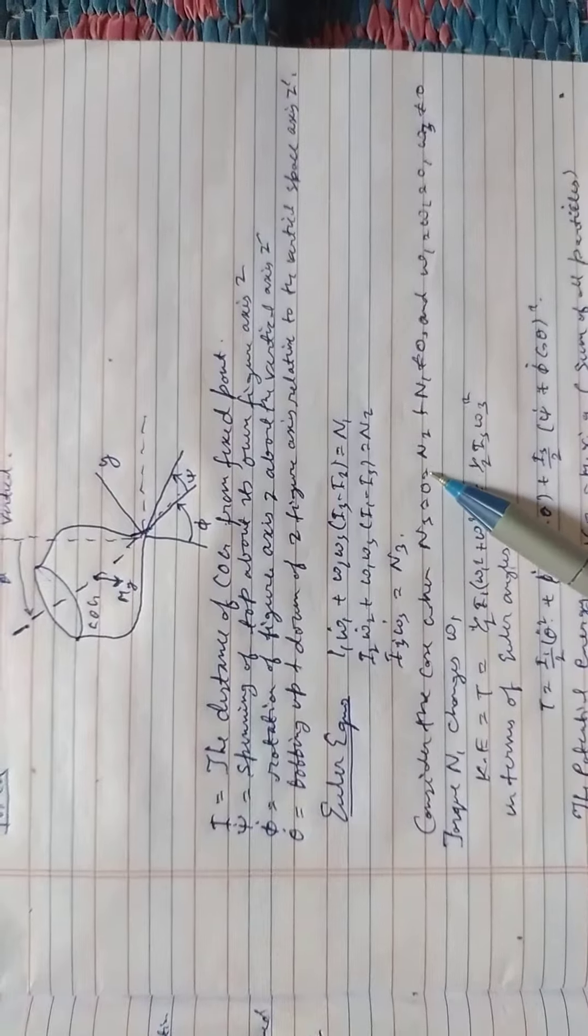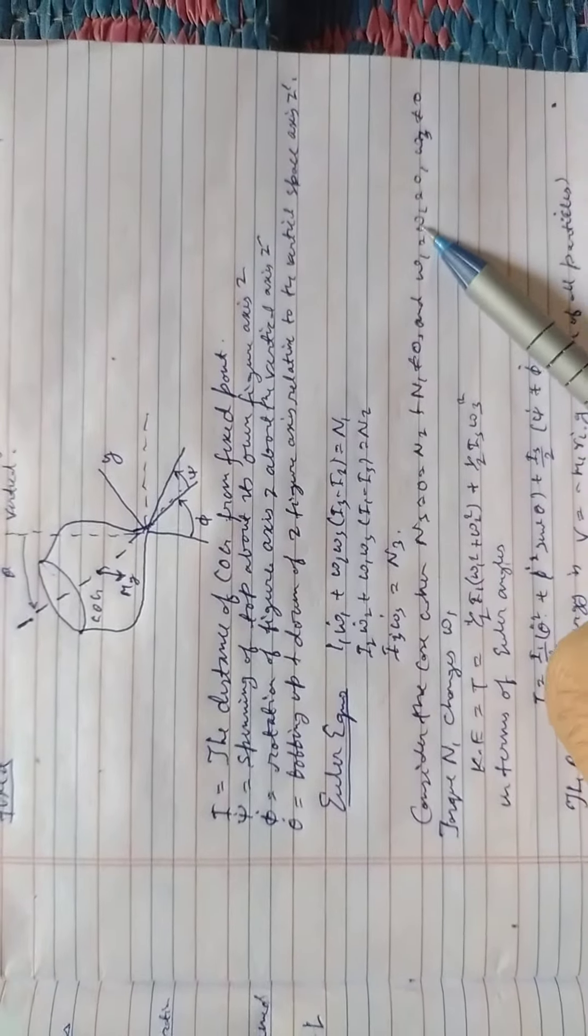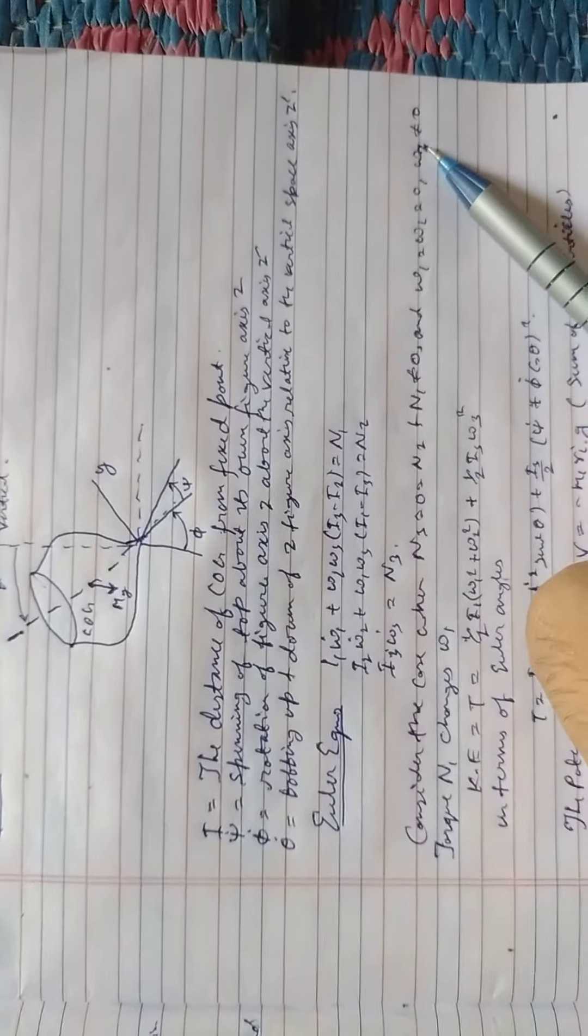Consider the case when N3 is equal to N2 is equal to 0, N1 is not equal to 0. Omega 1 is equal to omega 2 is equal to 0. Omega 3 is not equal to 0.